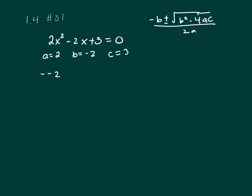So we've got the negative B part, plus or minus the square root of B squared minus 4 times A times C all over 2 times A. 2 times 2 in this case.